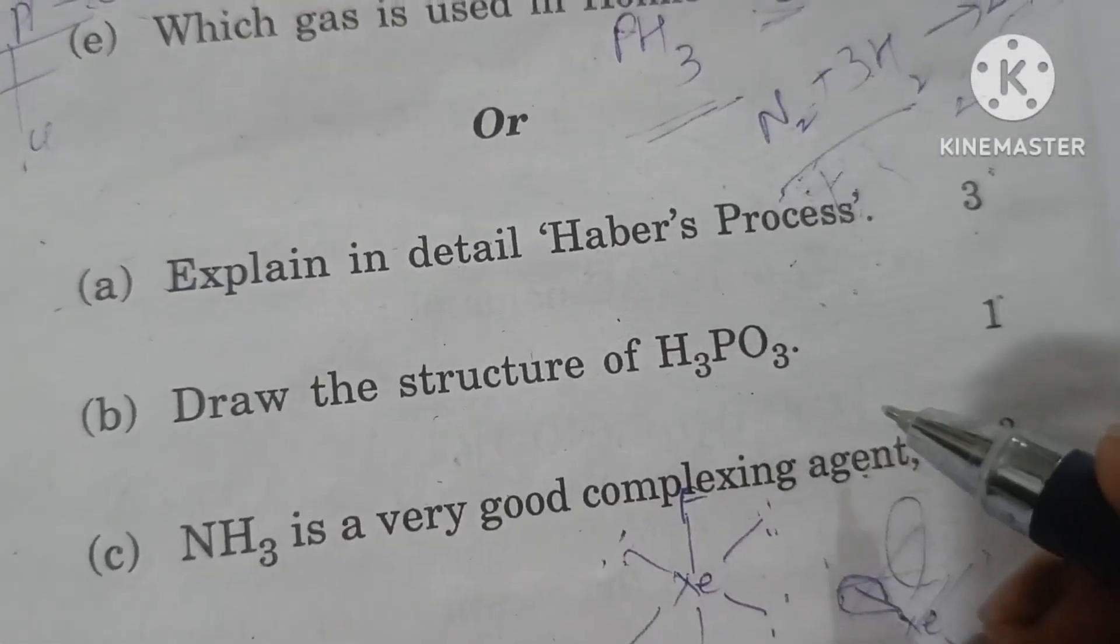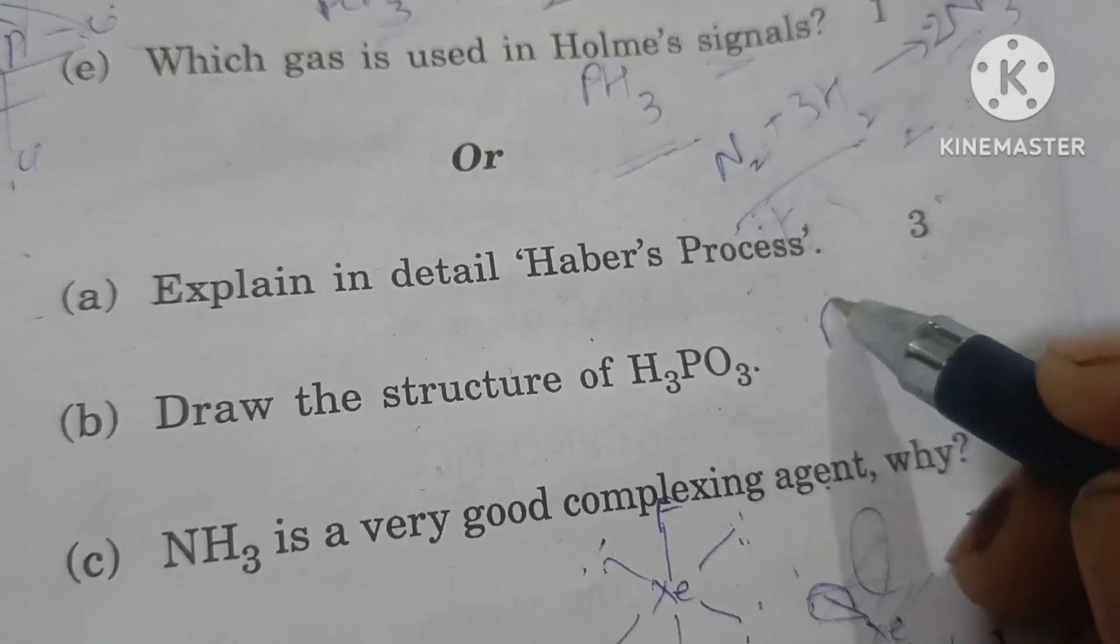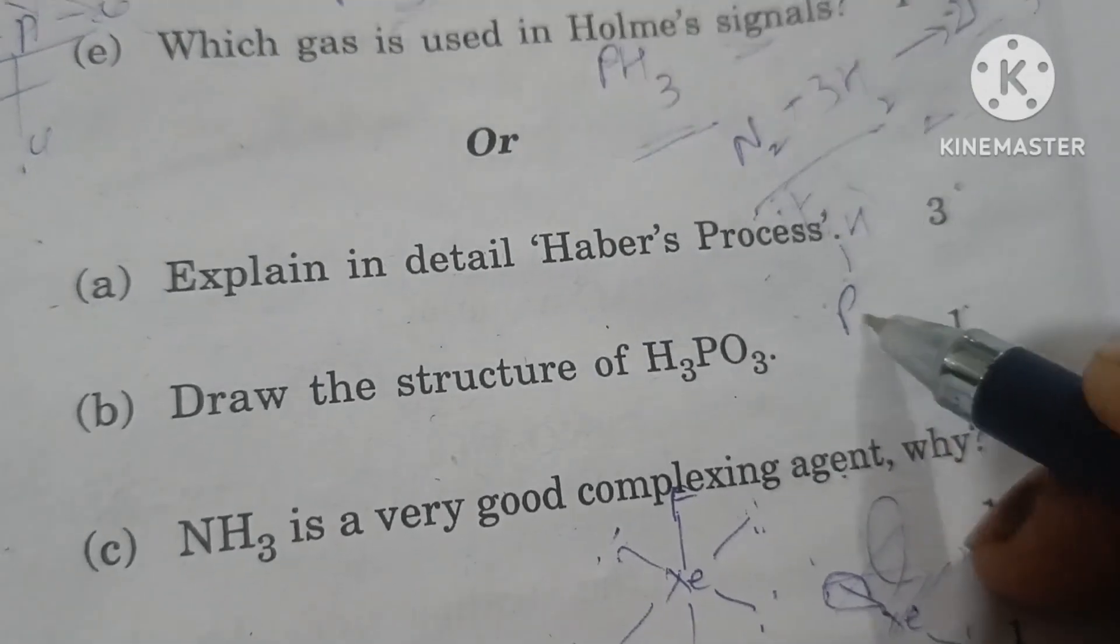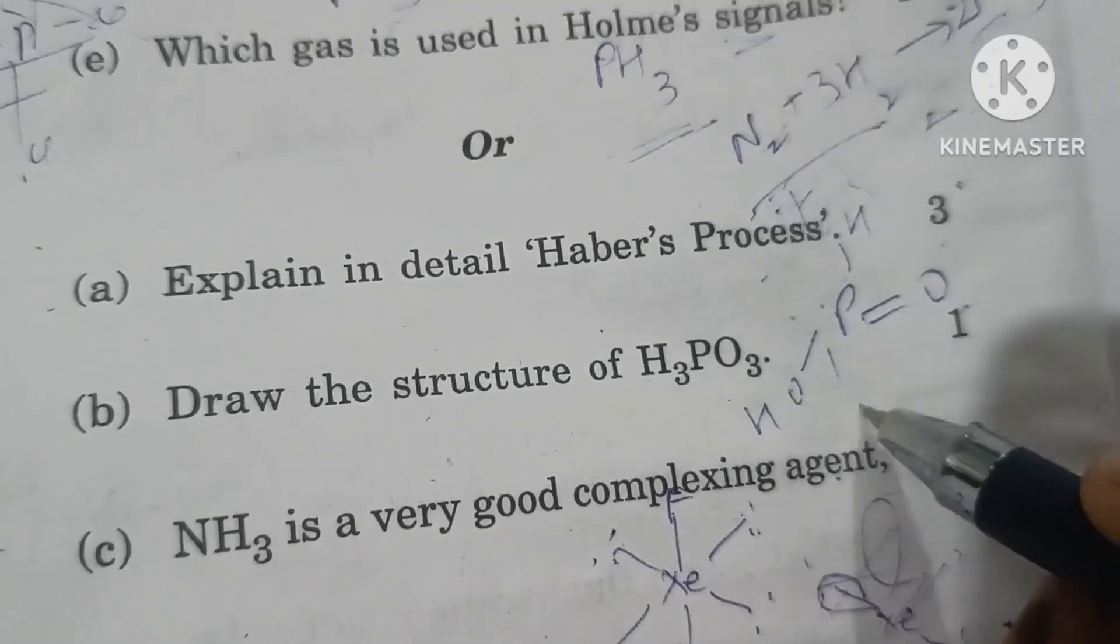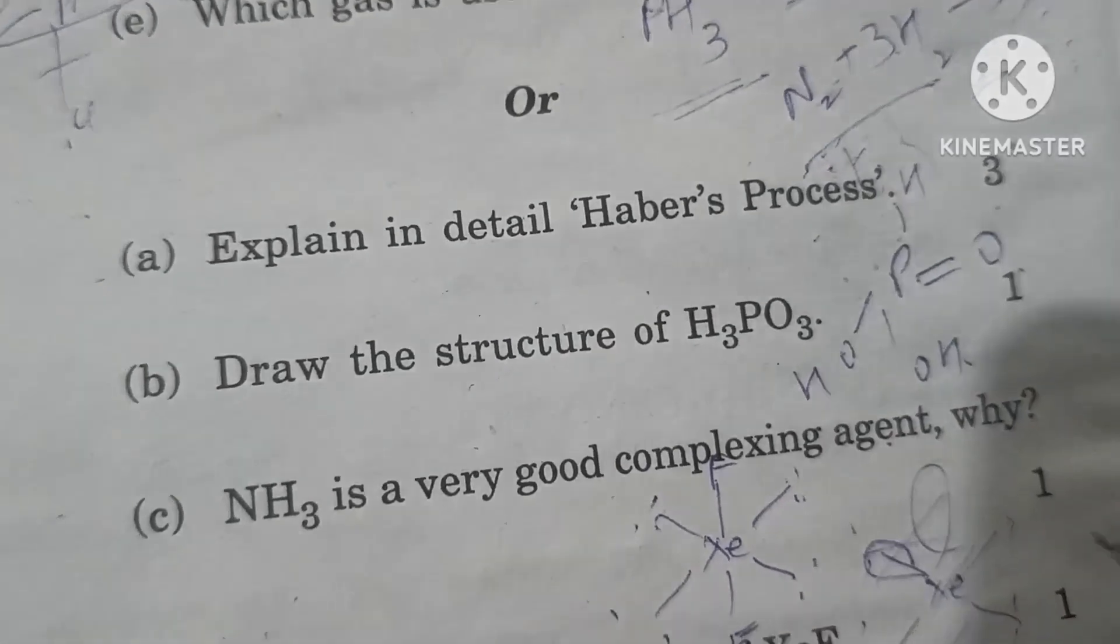Draw the structure of H3PO3. Phosphorus atom has one H, one double bond O, and two OH groups. It's a dibasic acid with tetrahedral structure.